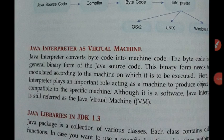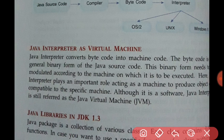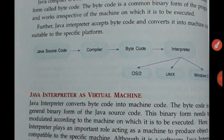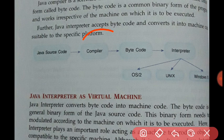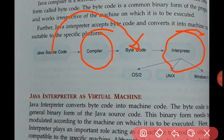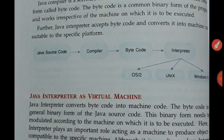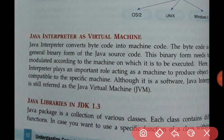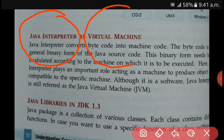This is the second part, second lesson. The first topic is Java interpreter as virtual machine. As I told earlier, in Java we need both a Java compiler and a Java interpreter. The Java compiler will convert source code to byte code, and the interpreter will convert byte code to machine code.